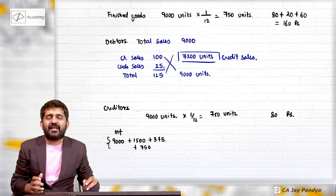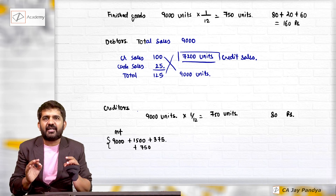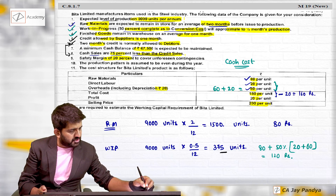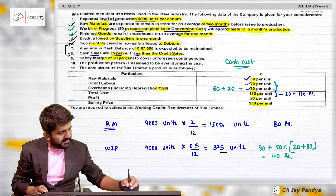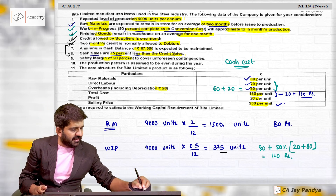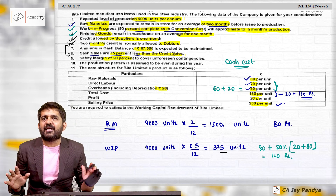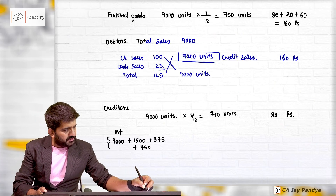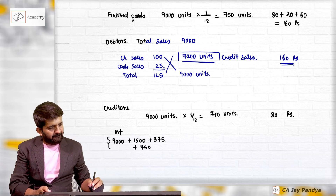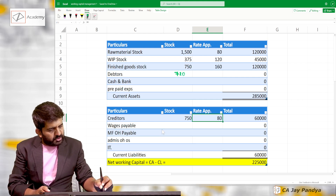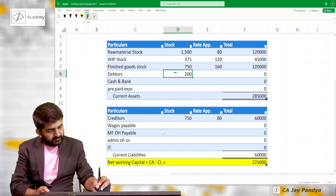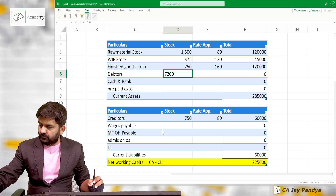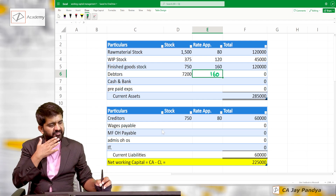What rate should be taken for debtors? Normally if nothing is given, you should take debtors on cost. Total cost is ₹180 minus ₹20 depreciation = ₹160. You can also take debtors at selling price of ₹200, but I am taking it at cost in absence of information, removing depreciation, which gives ₹160. So credit sales debtors should be valued at ₹160. Entering into the Excel sheet: debtors = 7,200 units at ₹160.